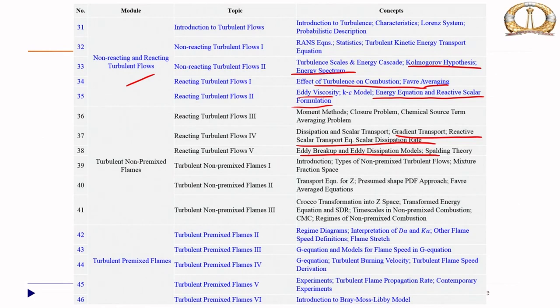We looked into turbulent non-premixed combustion, showing different types of non-premixed turbulent flames and introducing the concept of mixture fraction as a conserved scalar. We discussed the transport equation for Z, and to close it how one can use the presumed-shape PDF approach and the Favre-averaged equation. Because mixture fraction emerges as such an important quantity, we wrote the governing equations with mixture fraction as the independent variable — the Crocco transformation in Z-space — transforming the energy equations into mixture fraction space, which led to the emergence of scalar dissipation rate as a characteristic diffusivity. We also touched upon conditional moment closure modeling and the regimes of non-premixed combustion.